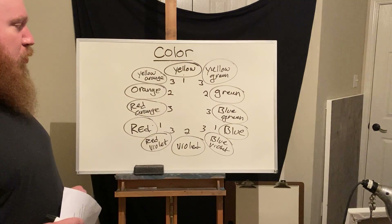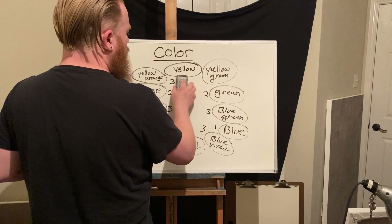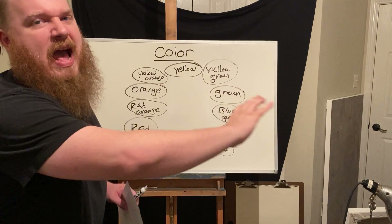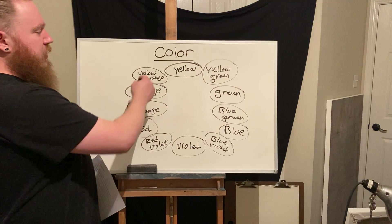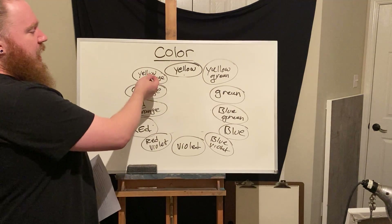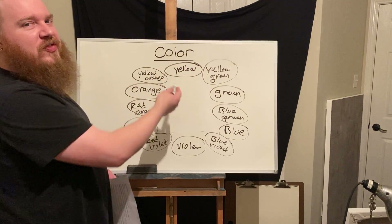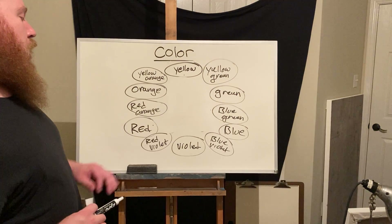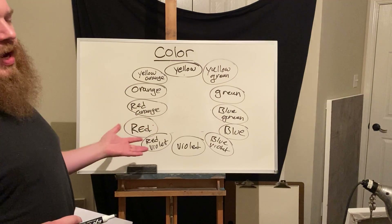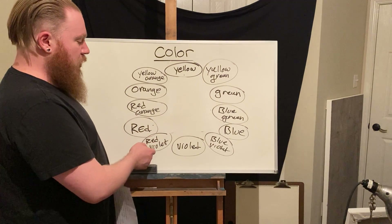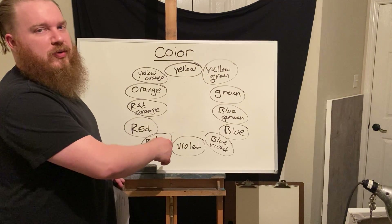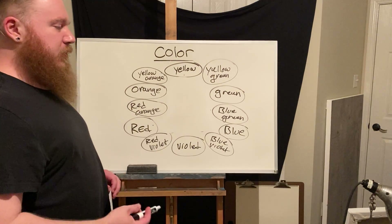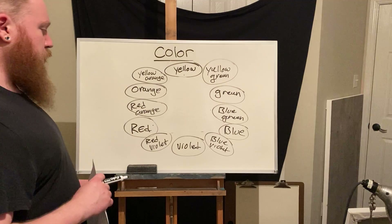We can add gray, black, or white to any of these colors to create a massive variety. Even within a tertiary like red-violet, we can have one that's much more akin to red or one that's much more toward violet. And then by adding gray, black, or white we can get even further variation. Those options will be shown in a few examples shortly.